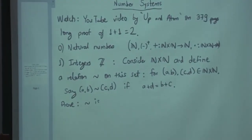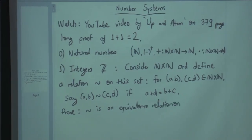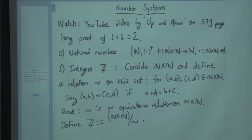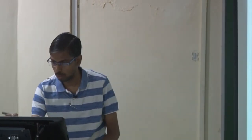We prove that tilde is an equivalence relation — check reflexivity, symmetry, and transitivity. Then define ℤ to be the set of equivalence classes of ordered pairs of natural numbers with respect to this relation. These equivalence classes are precisely the integers.